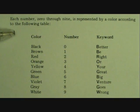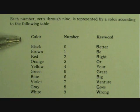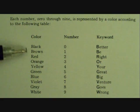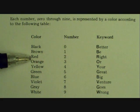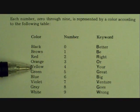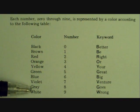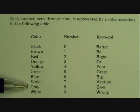Each color on the resistor represents a number 0 through 9, represented according to the following color chart: black is 0, brown is 1, red is 2, orange is 3, yellow is 4, green is 5, blue is 6, violet is 7, gray is 8, and white is 9.